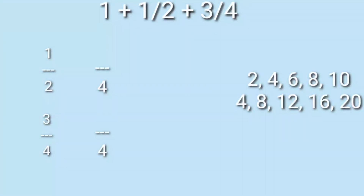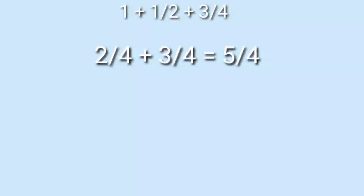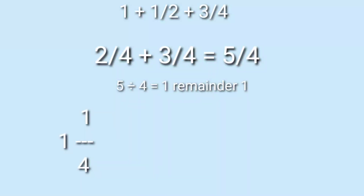We multiply 2 by 2 to get 4, so we do the same at the top. For 3/4, multiply by 1, so just copy 3/4. So 2/4 plus 3/4 equals 5/4. Since it's an improper fraction, divide it — the answer is 1 remainder 1, which is 1 and 1/4. Adding the remaining whole number 1, the answer is 2 and 1/4 cups of butter.